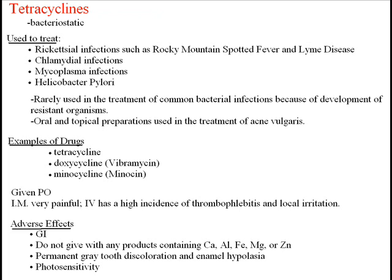Adverse effects include GI upset, which includes nausea, vomiting, and diarrhea. Do not give tetracyclines with any product containing calcium, aluminum, iron, magnesium, or zinc, as these interfere with the absorption of the tetracycline. Tell patients not to take tetracycline drugs with milk or milk products, vitamins containing zinc or iron, or antacids containing calcium or magnesium.